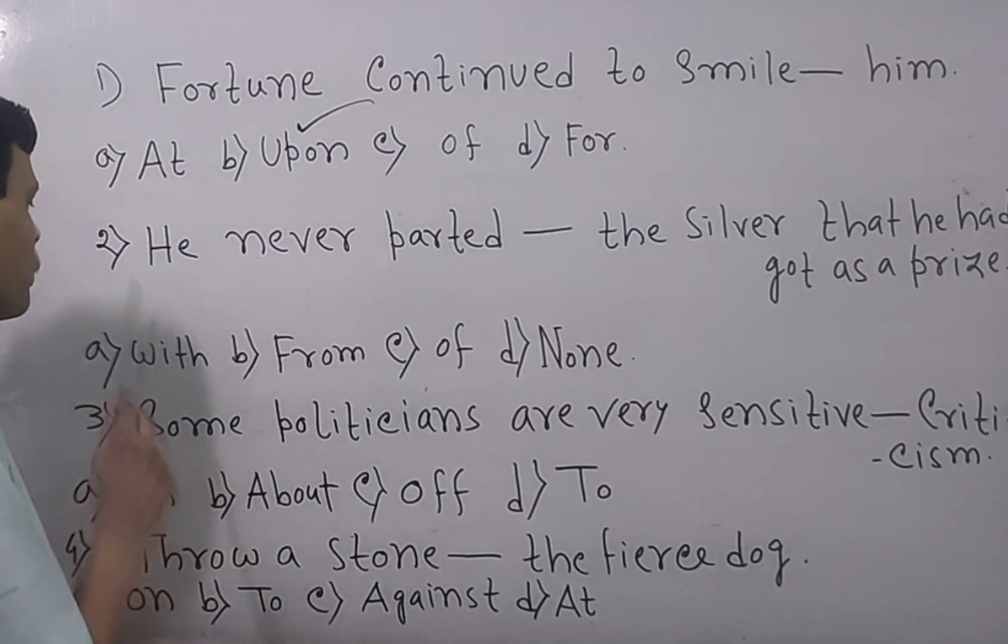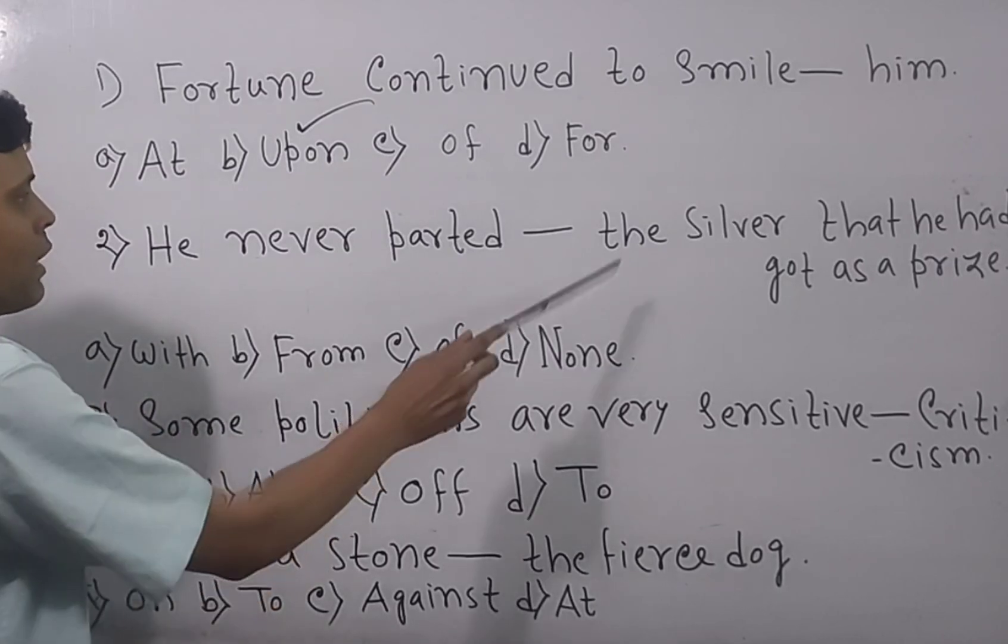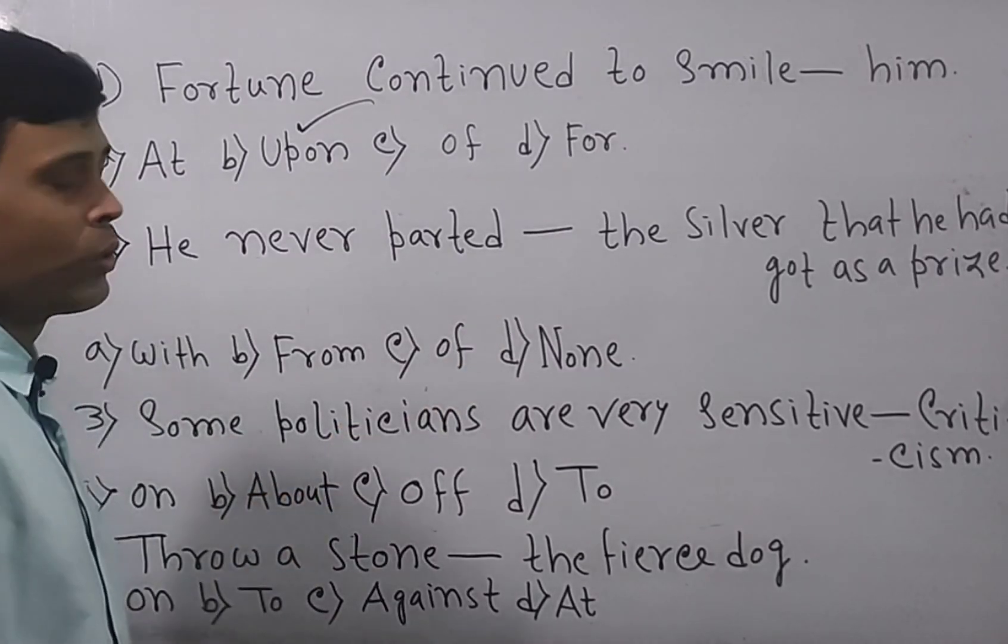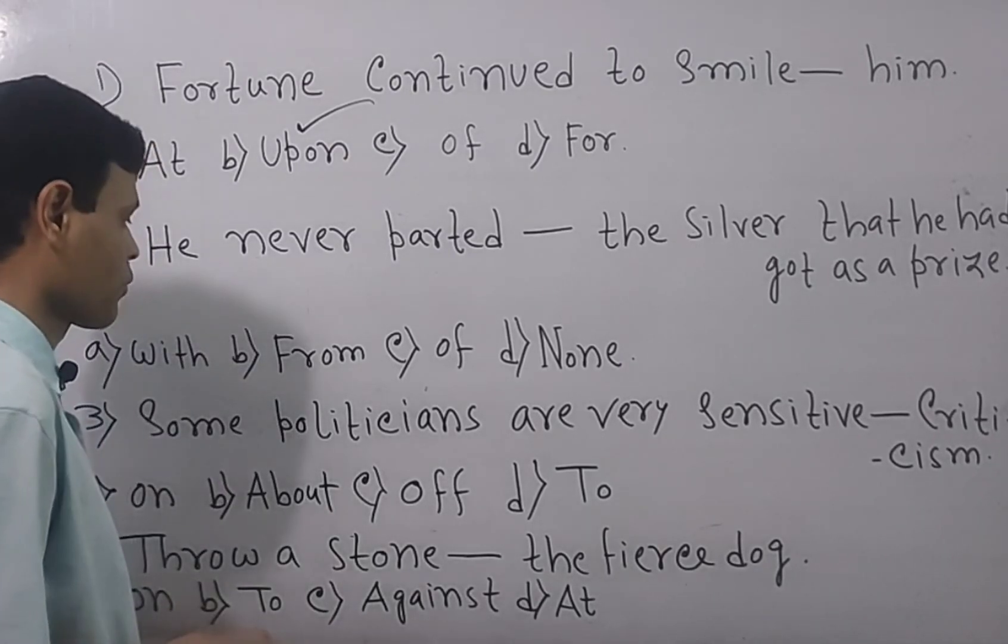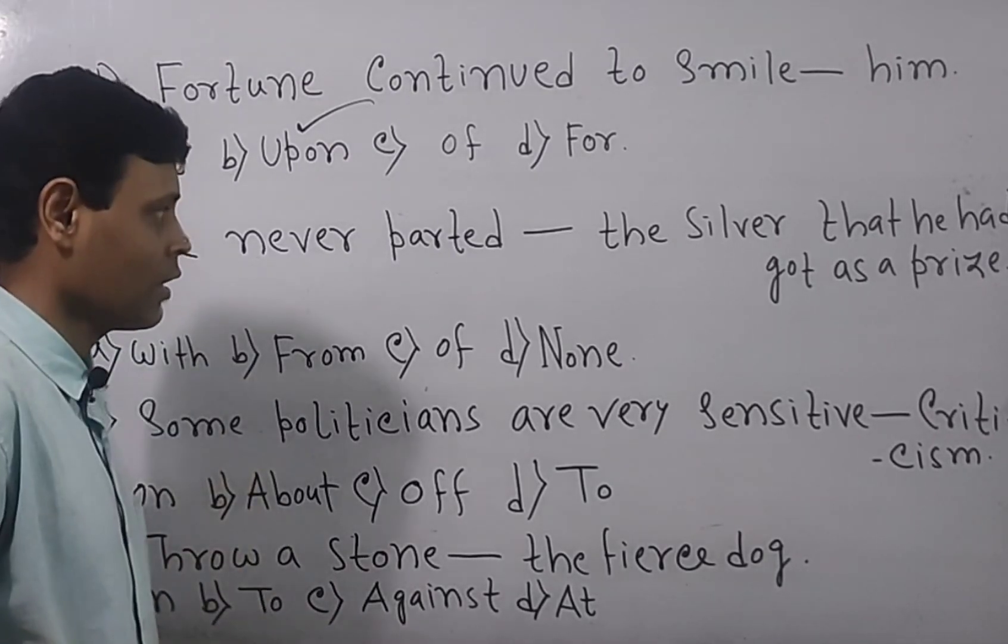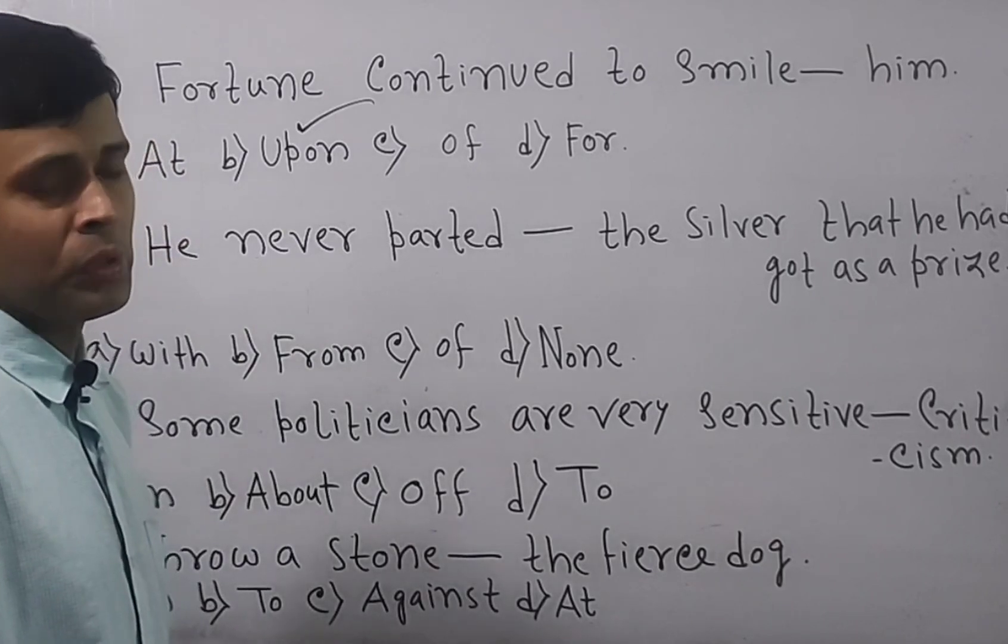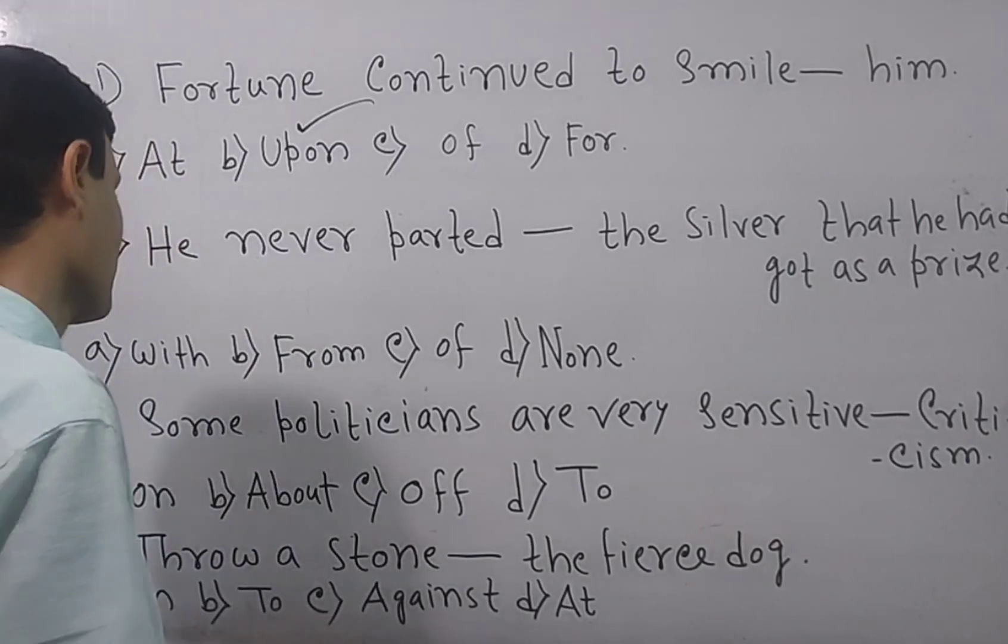So according to this rule, of the four options, with will be the answer. If any person had been here, we might have selected the second option, that is from. But here the object is there, so we need to select the first one, that is with.